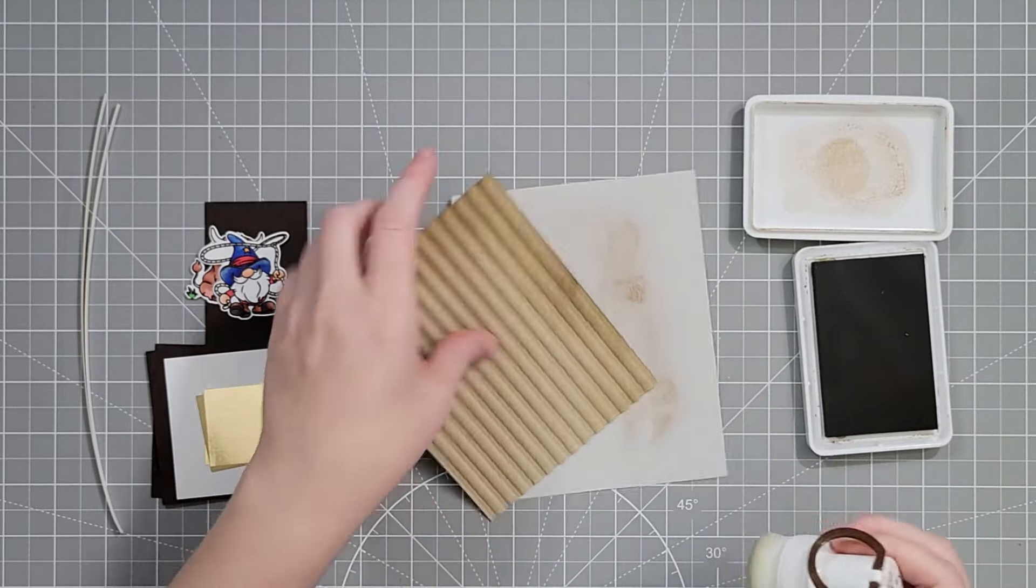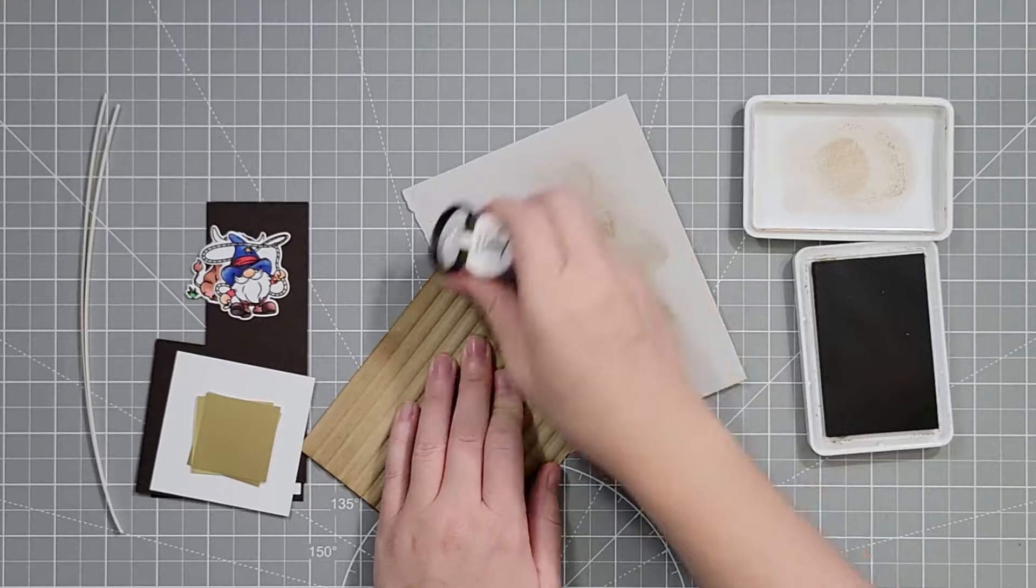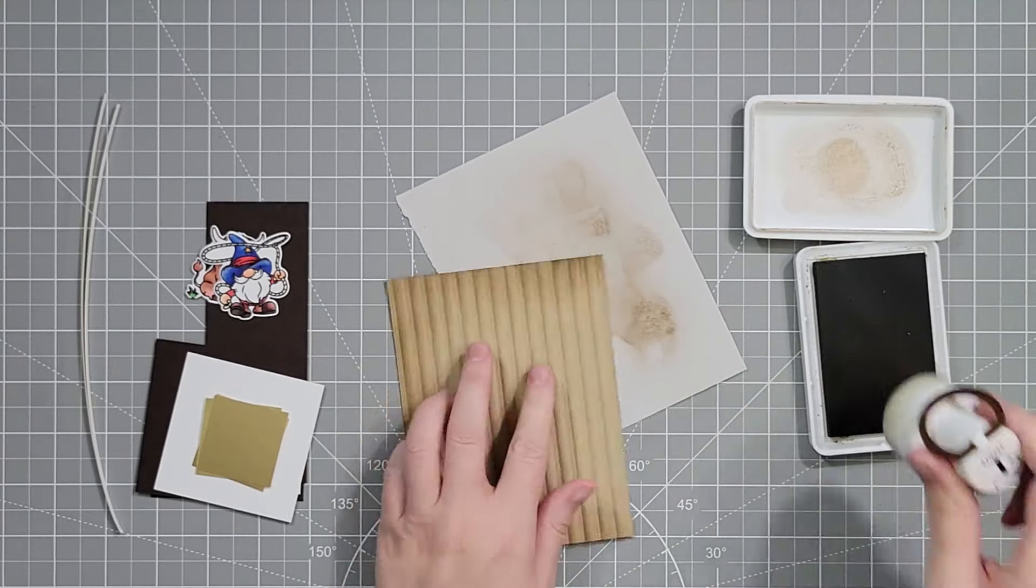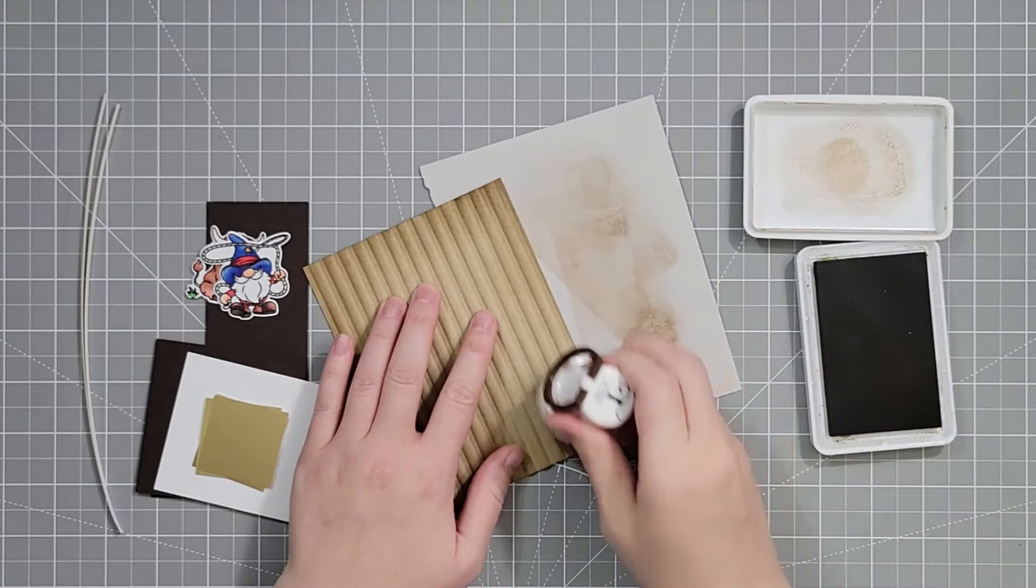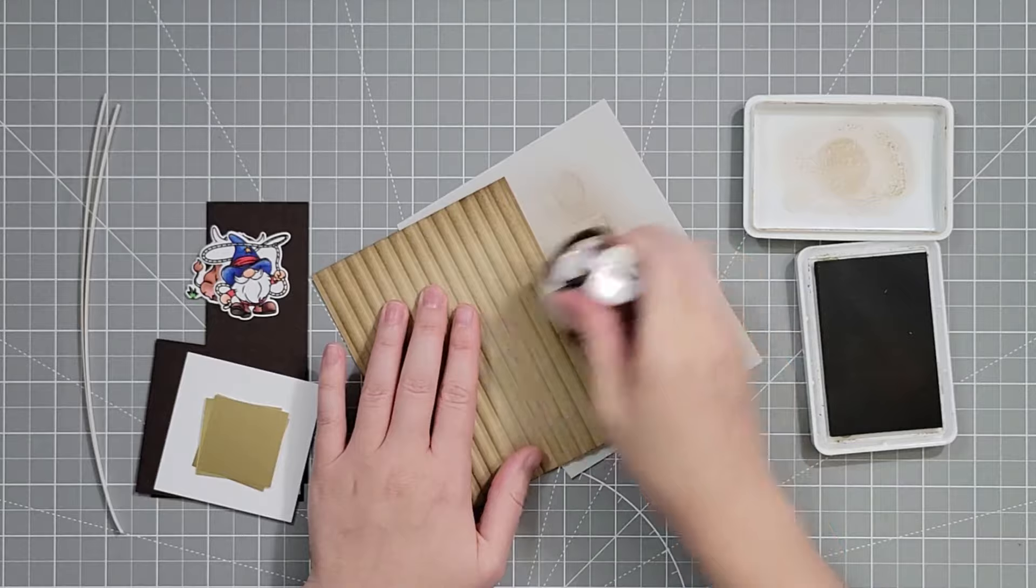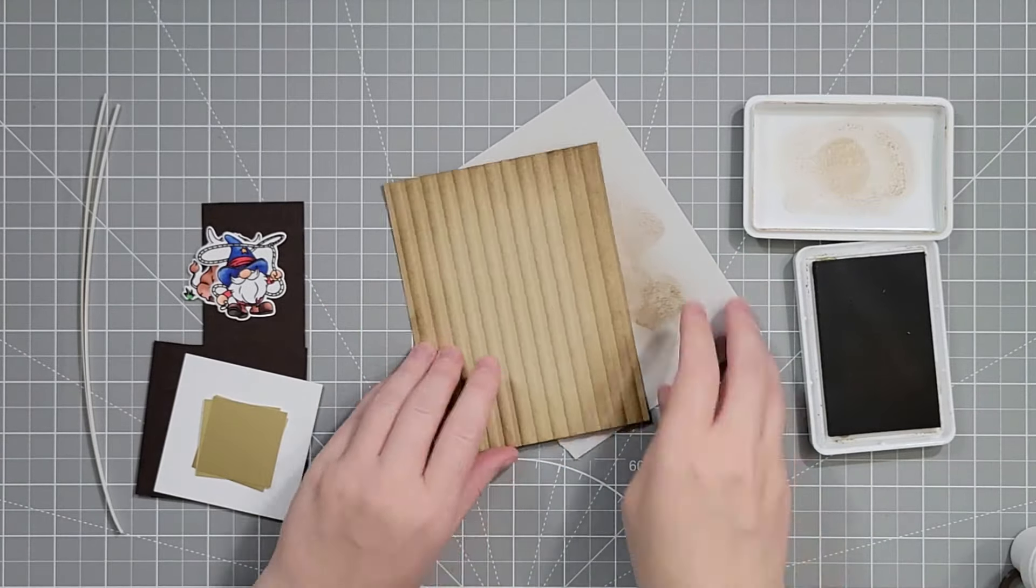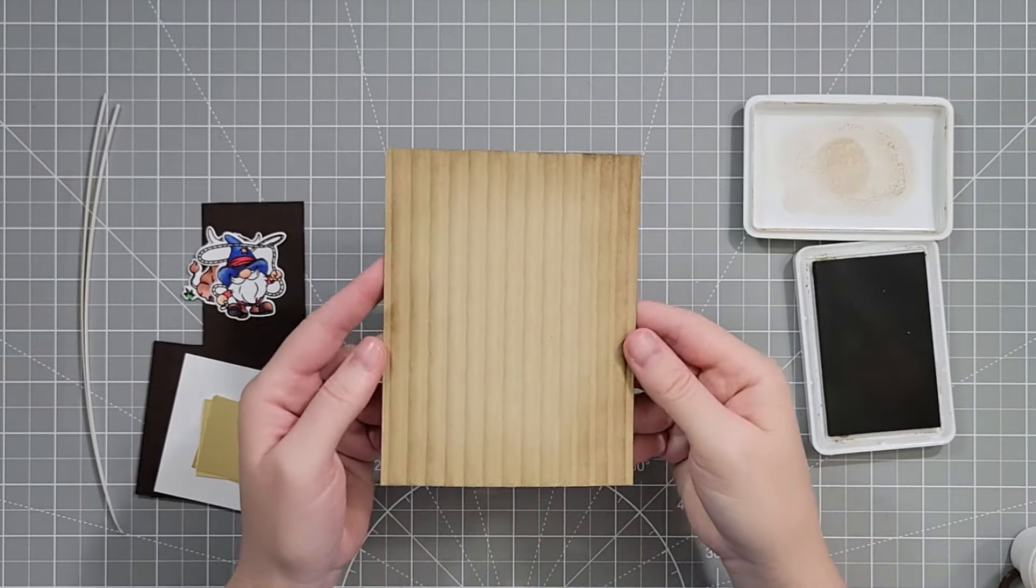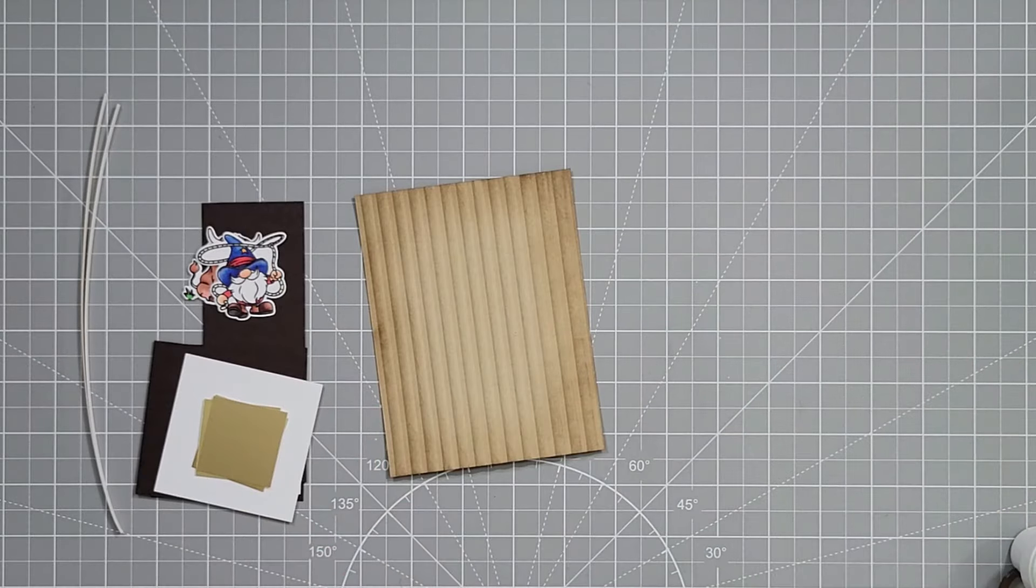I'm just adding a little bit of brown ink around the outside edges. We have a gnome cowboy you guys, he's so stinking cute. This whole set just cracks me up. I'm using Gnome on the Range from Trinity Stamps.